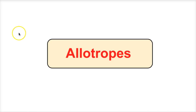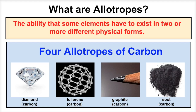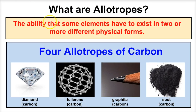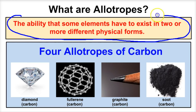Hey you guys, this is Mr. Millings and today we're going to learn about something called allotropes. So what are allotropes? Well, allotropes refers to the ability that some elements have to exist in two or more different physical forms.